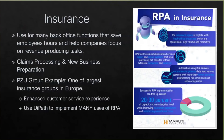In the insurance industry, RPA is used for many back office functions so employees can focus on client retention and revenue-driving tasks. Claims processing and new business preparation are some things they use it for. A diagram shows RPA facilitating communication between legacy and newer systems. Automation using RPA enables enterprises to process data from various systems with incomparable accuracy. Successful implementation can free up 20% to 30% capacity, allowing employees to use their time minimizing operational risks and enhancing the customer experience.